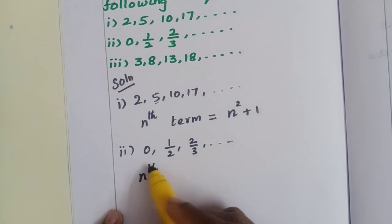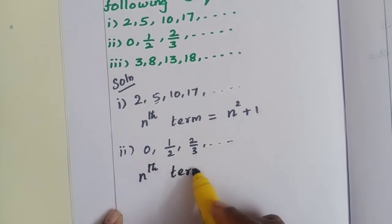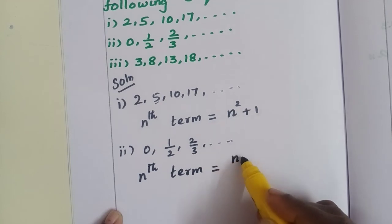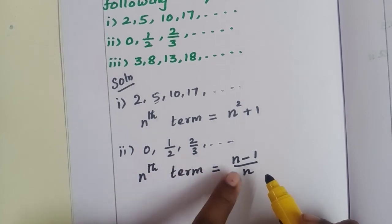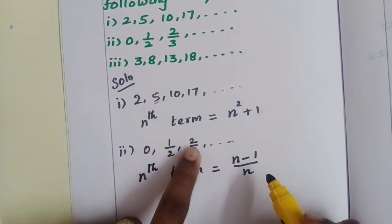nth term is equal to n minus 1 by n. Denominator is n, numerator is n minus 1. nth term equals (n-1)/n.